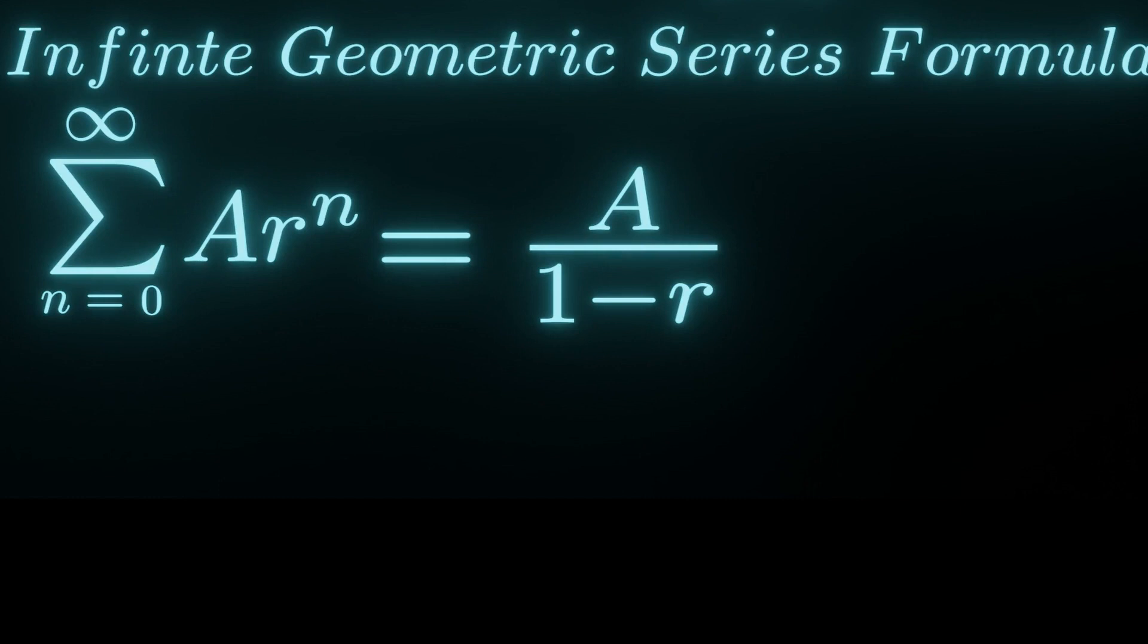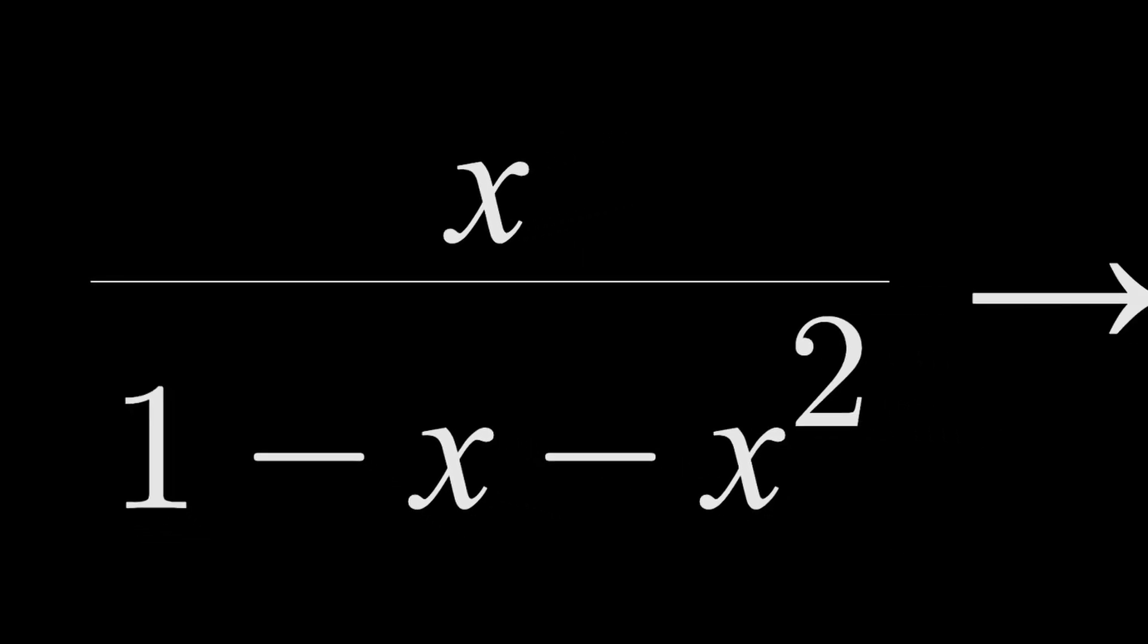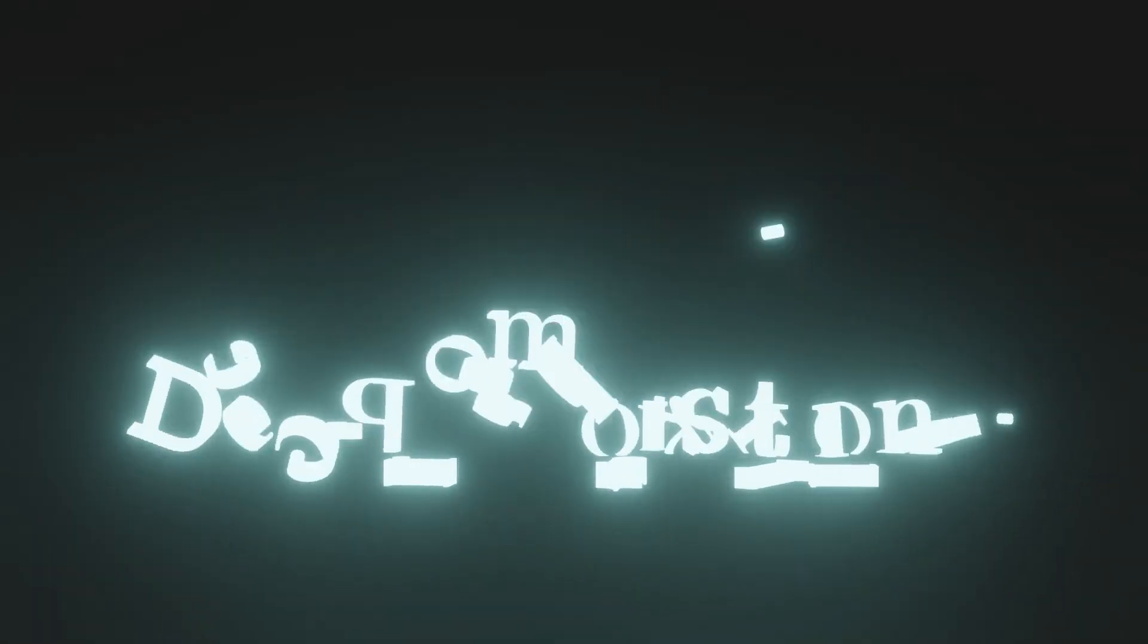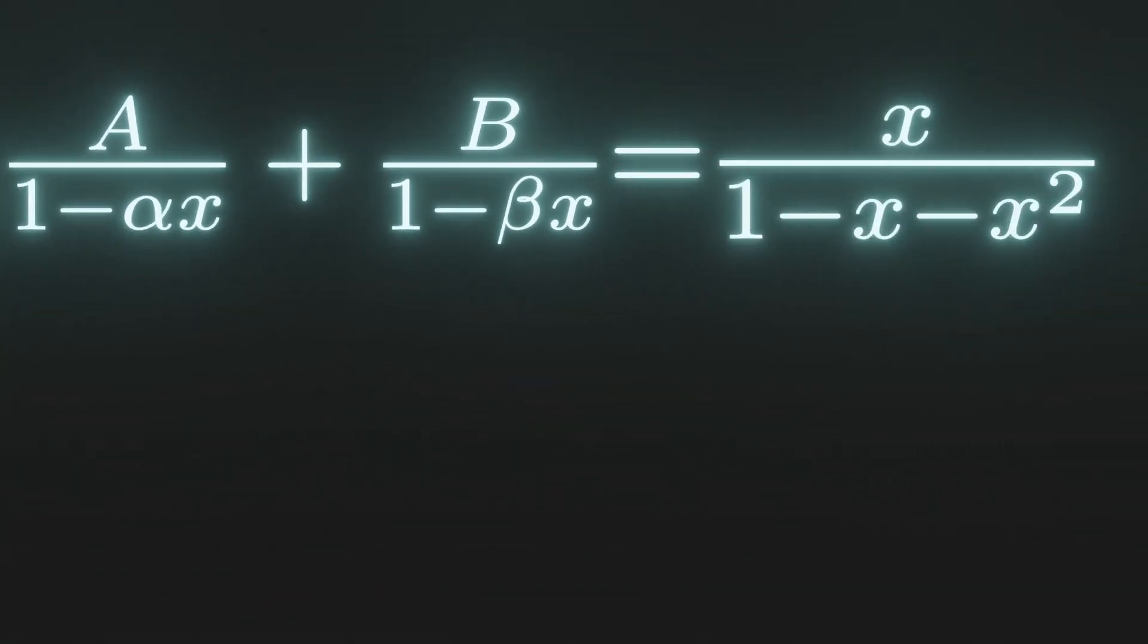Last time, we could just use the infinite geometric series formula, but this time we can't do that directly. We want them in the form of a sub n over 1 minus r. We can get that by doing partial fraction decomposition.